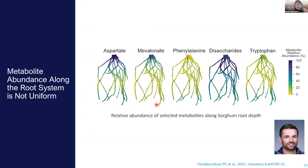Here is an example where we are using this same root system and looking at metabolite abundance and their distribution along the roots. These are five selected examples. Metabolite relative abundance is shown with purple being relatively high abundant and yellow being low. If you look at aspartate, you start to see that it's localized more to the crown of the roots and less abundant throughout. Phenylalanine seems to be relatively low abundant throughout the root. This shows the heterogeneity between metabolites in their abundance and localization along the roots.